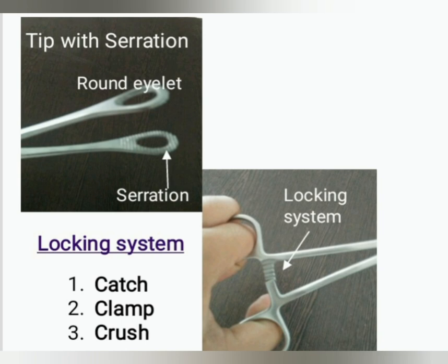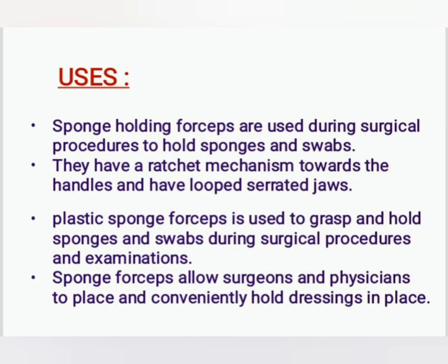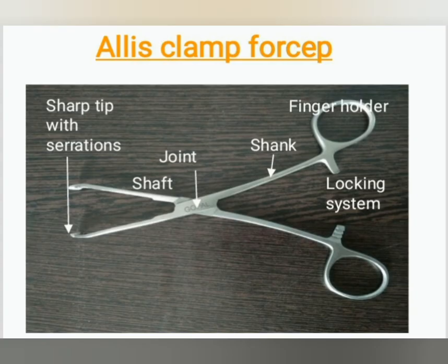The sponge holding forcep has three locking systems: catch, clamp, and crush. Sponge holding forceps are used during surgical procedures to hold sponges and swabs. They have a ratchet mechanism toward the handles and loop serrated jaws. Plastic sponge forceps are used to grasp and hold sponges and swabs during surgical procedures, examinations, and to conveniently hold dressings in place.